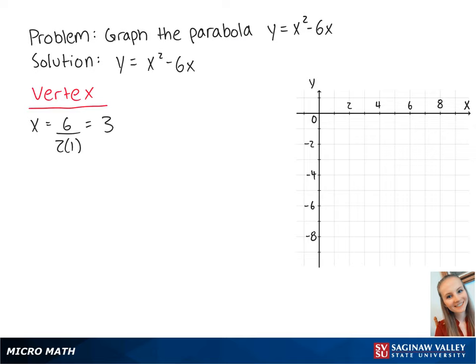If we plug 3 into the original equation, we get y equals 3 squared minus 6 times 3, which is equal to negative 9. So the vertex is 3, negative 9.